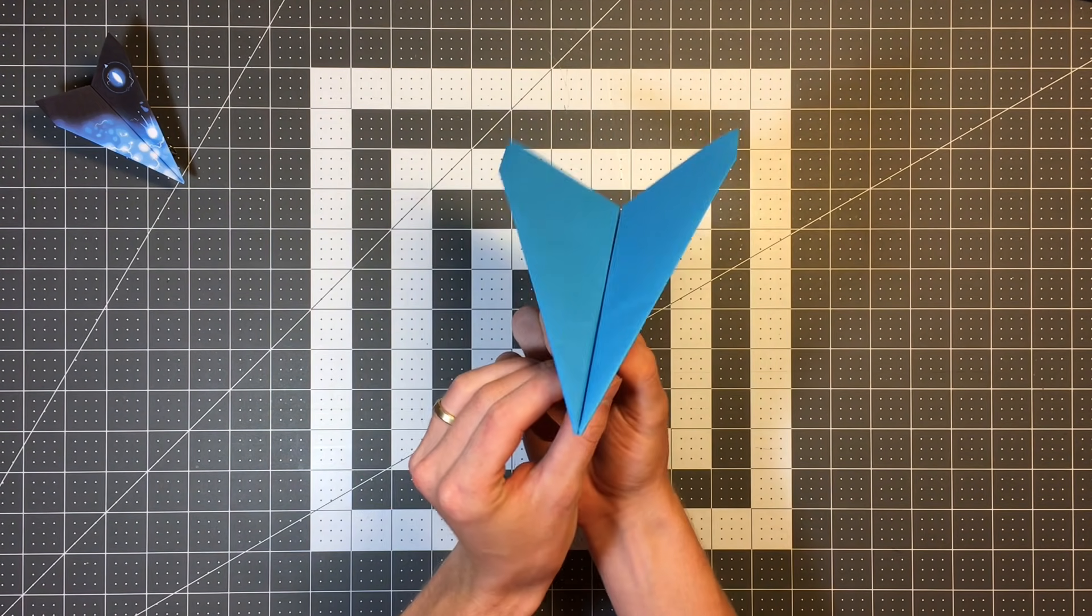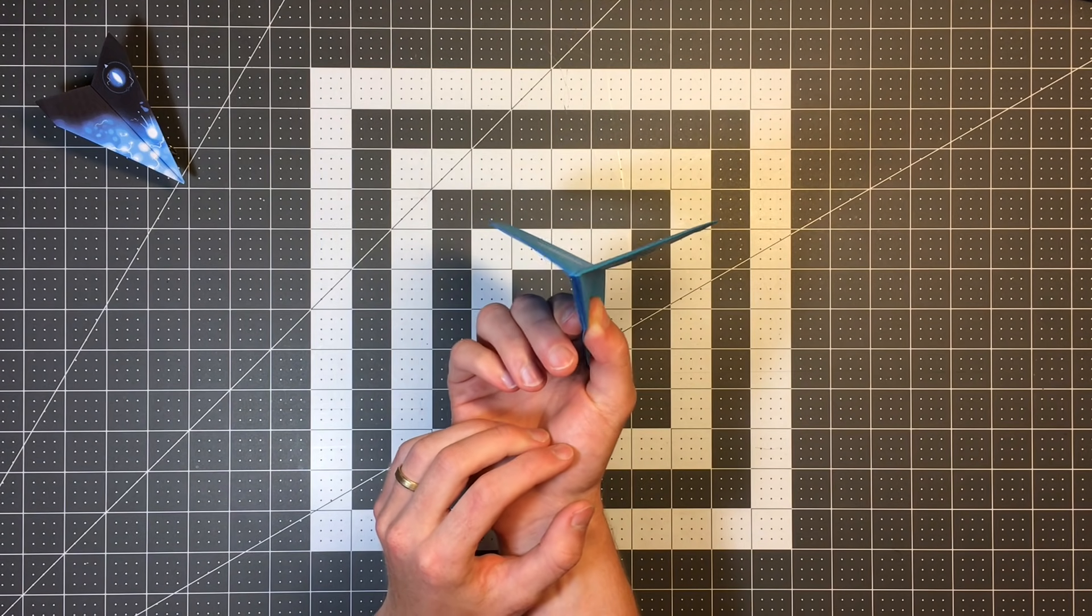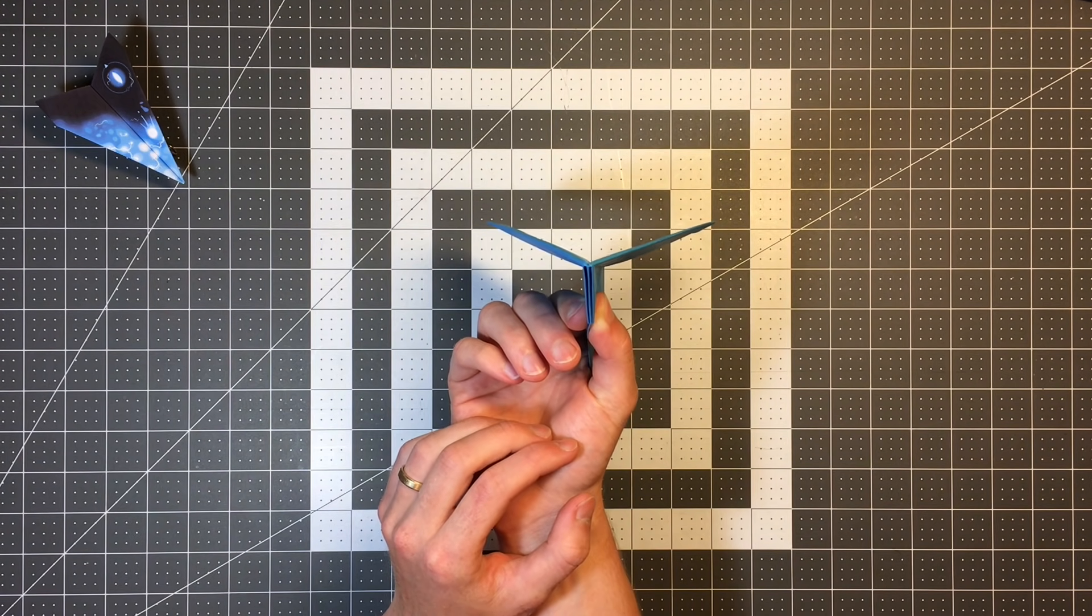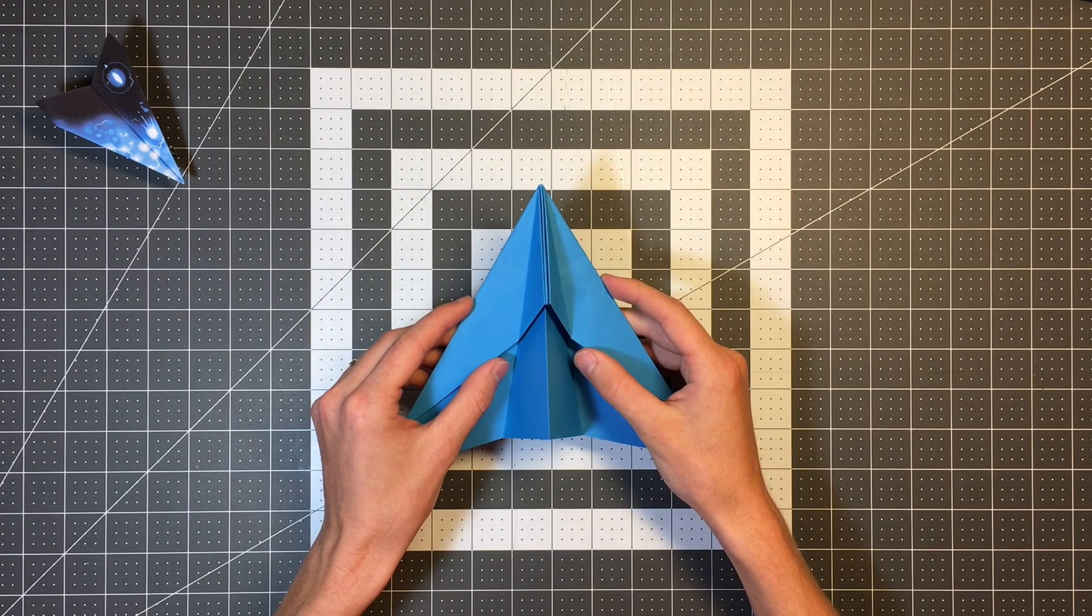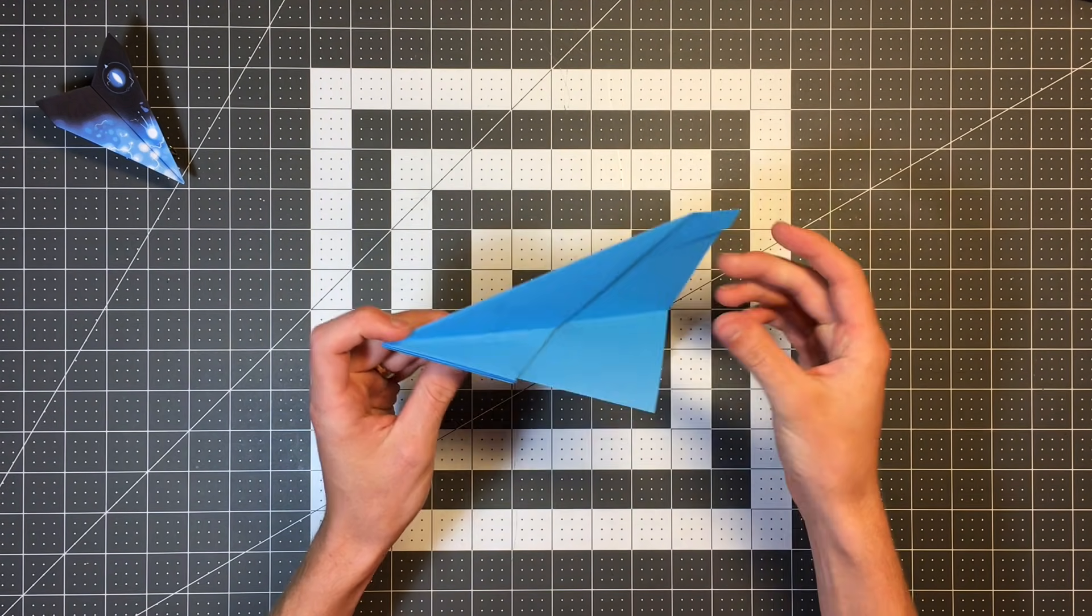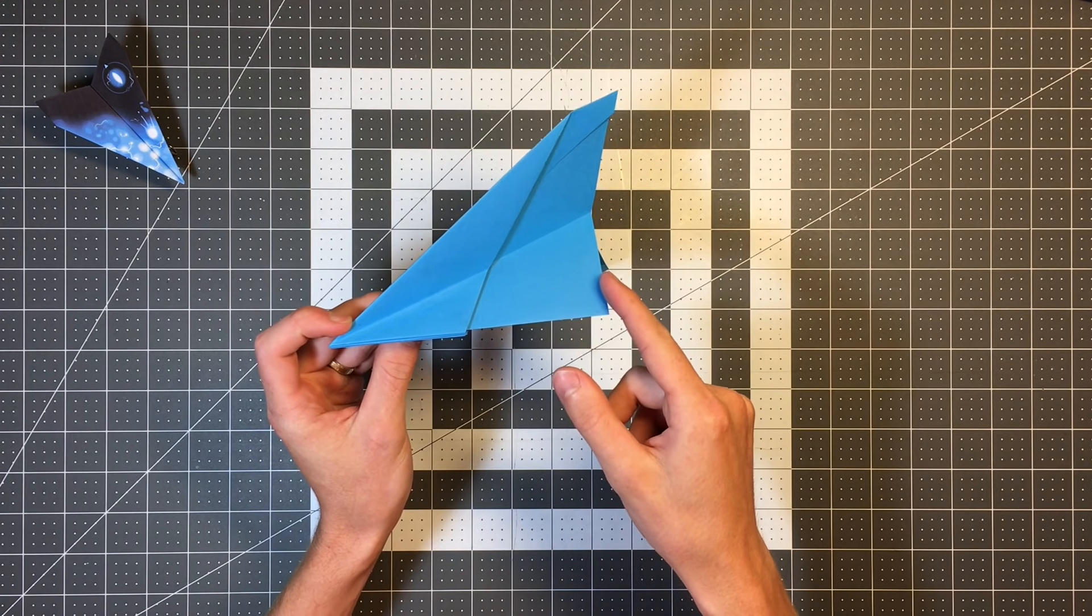If we look at the front of the plane, you can see that it is exceptionally aerodynamic. And that's because I've locked the layers together on the bottom of the plane.